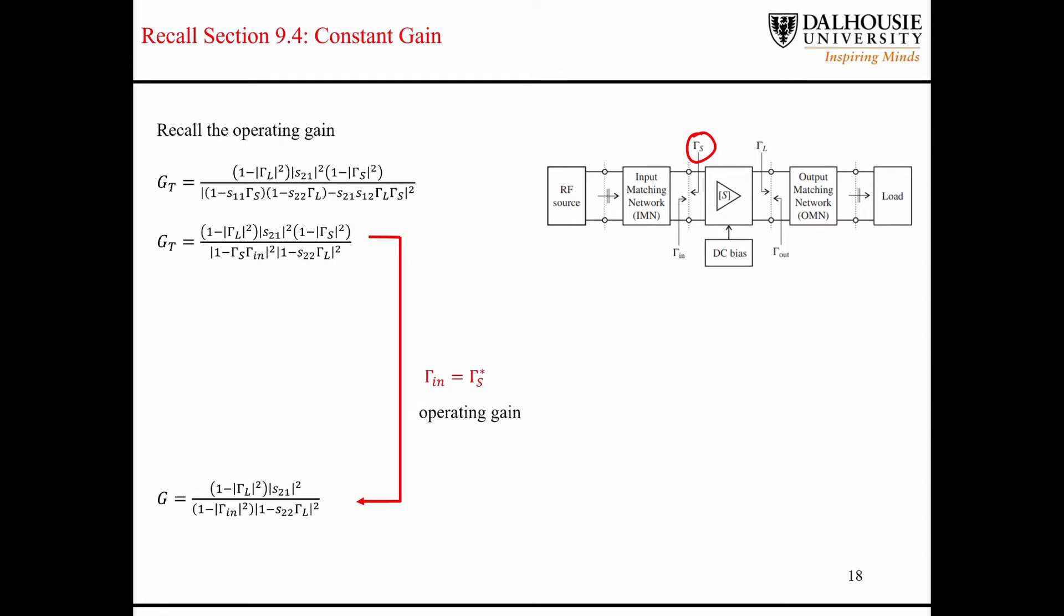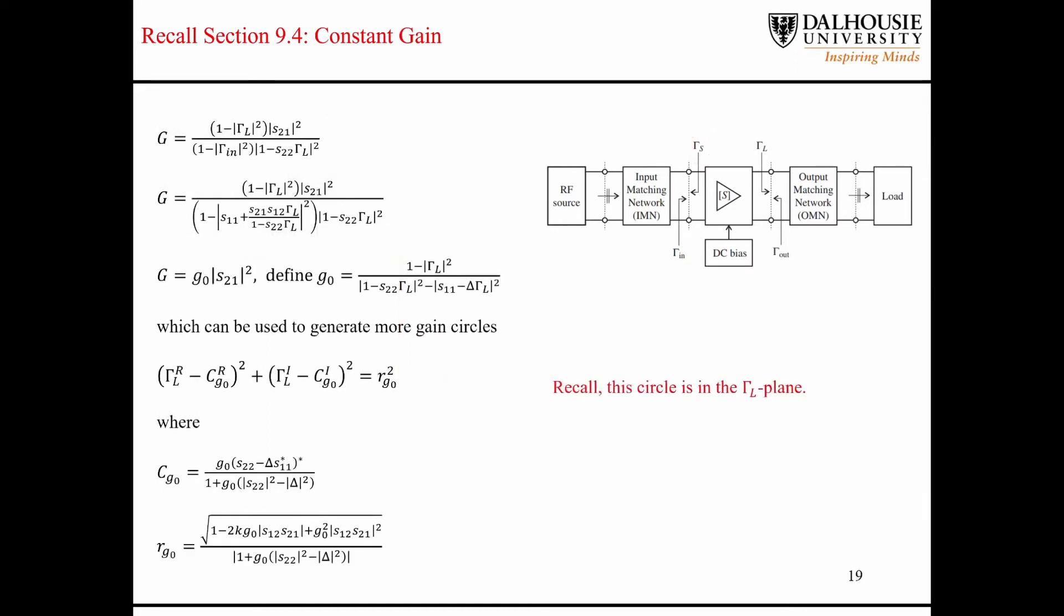This can be problematic, for example, if you are working with the equations that we saw last time for the operating gain. Recall that these equations for the operating power gain circle represent circles in the gamma l plane. So these equations in this form are not compatible with the noise figure circles.